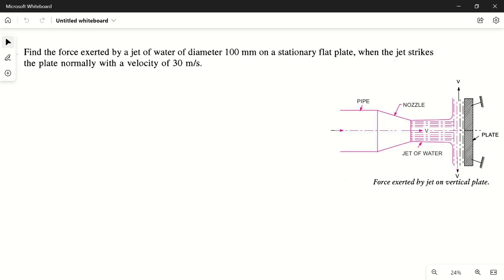Let's write the values which are given. Diameter of the jet is given as d equals 100mm, which is equal to, because all the other quantities are given in meter and second, we have to convert all values in the same unit. So we can write it as 100 upon 1000 meters which will be equal to 0.1 meters.